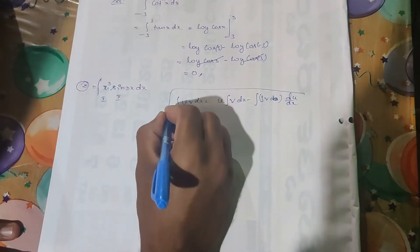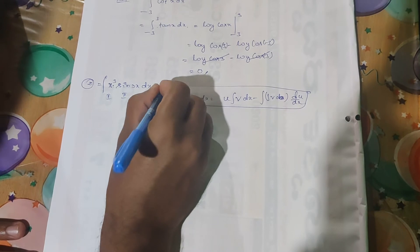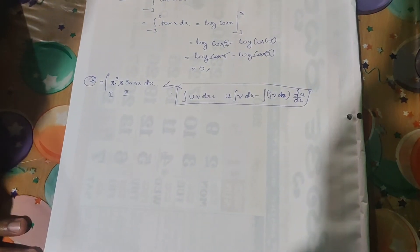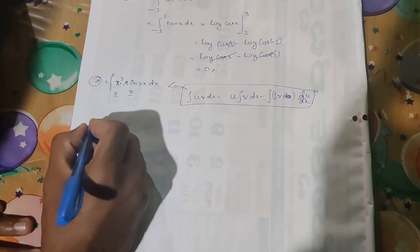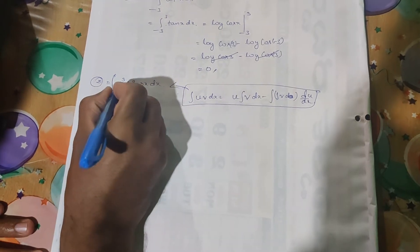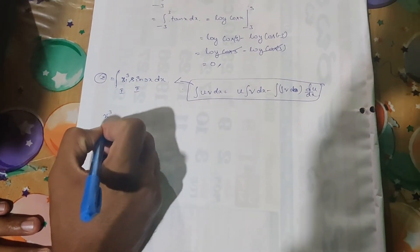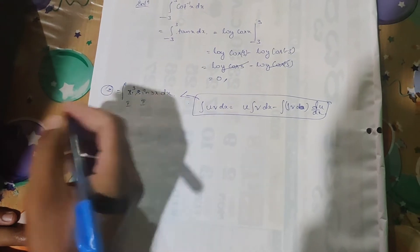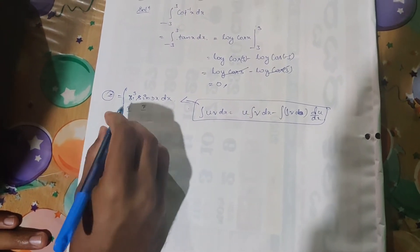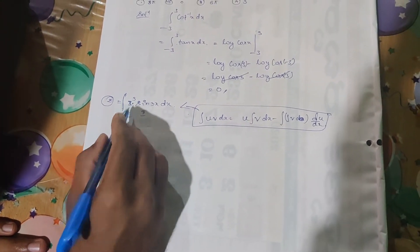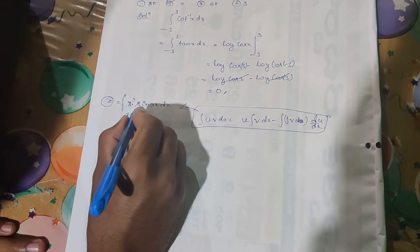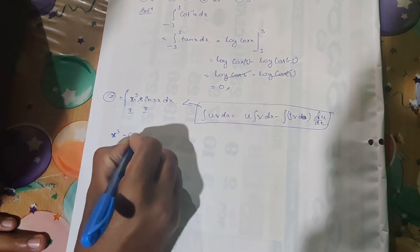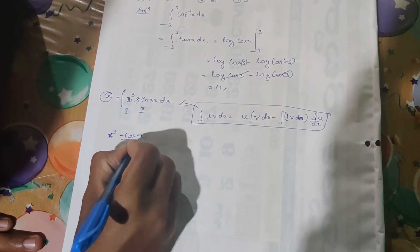The same formula is applied on this question: integration of x to the power of 3 sin(3x) dx. The first function is x to the power of 3. The integration of sin(3x) gives minus cos(3x) divided by 3.